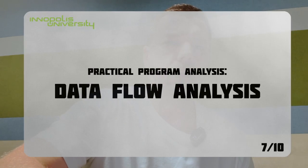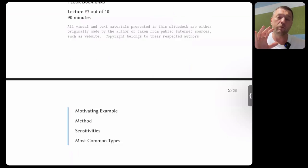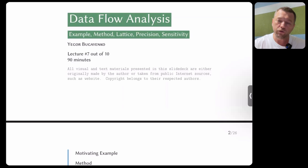This is lecture number seven and it will be about data flow analysis. We're getting to the most difficult areas of our course, which are about the actual analysis of programming — how we can look at a program and say something about what the programmer intended without running it. We are basically interested in static analysis of programs, meaning we don't run the program; we only look at the code and make decisions from that.